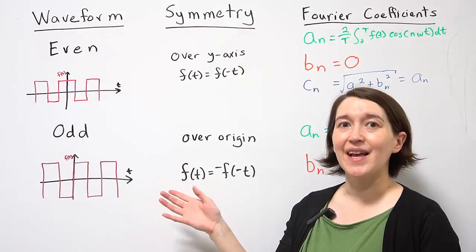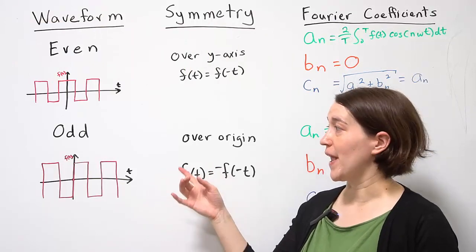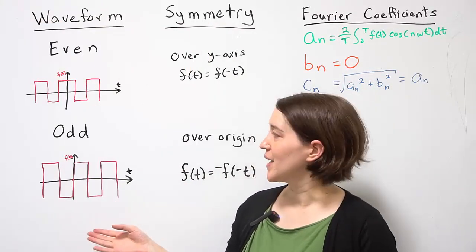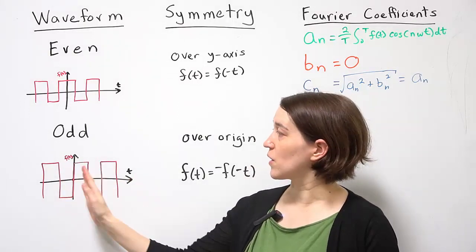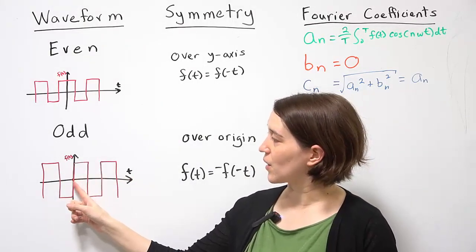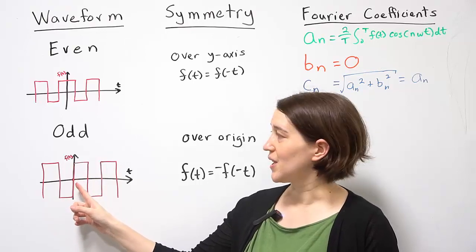Next we'll talk about an odd waveform. And I've drawn an example here. This is a different type of square wave, but it's shifted a little bit. And you can see that it goes directly through the origin here.